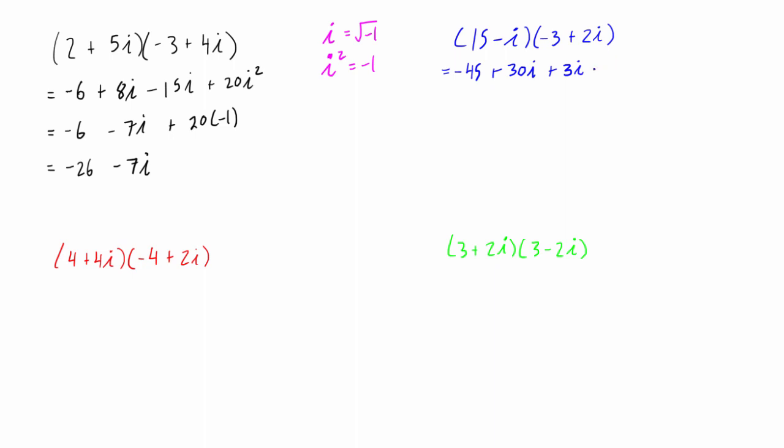Okay, we can clean this up a little bit. We have negative 45 plus 33i. And then this is minus 2, and i squared is negative 1, so times 2 times negative 1. So this is positive 2. We can combine that with the other real number here. And we're left with just negative 43 plus 33i for the product of these two complex numbers.